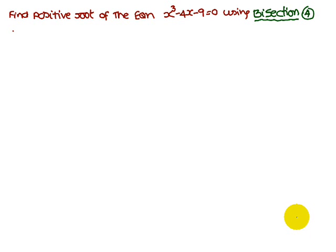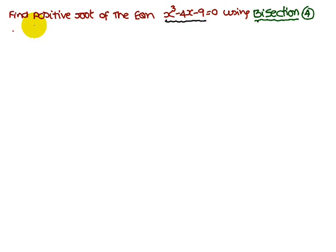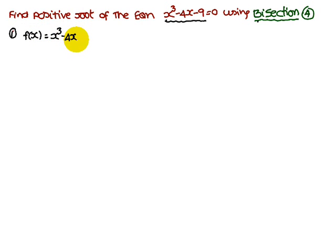Today we are going to discuss using the bisection method how to find out the root of the equation. Using the bisection method, we are going to find out the root of the equation x³ - 4x - 9 = 0. The function is f(x) = x³ - 4x - 9. The first step is to substitute values into the function.